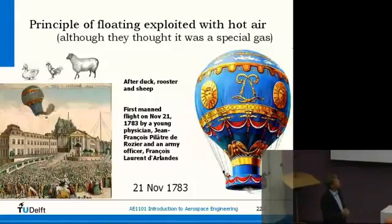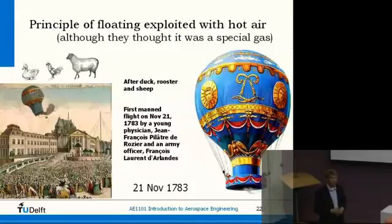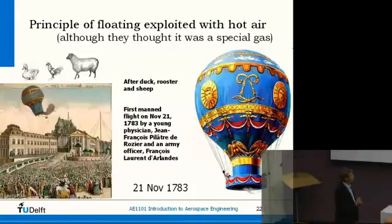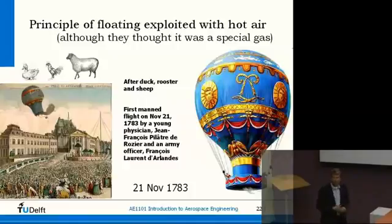They flew, and all survived — though I think the sheep broke its leg during the crash landing. The sheep was the first mammal to fly. Then the king — because by this time he was involved, the demonstration was done at Versailles — said let's get some prisoners and put them underneath the balloon. That was the moment when a physician and an army officer said, well, your majesty, maybe there are other people who would volunteer — and they would like to be the first ones to fly.